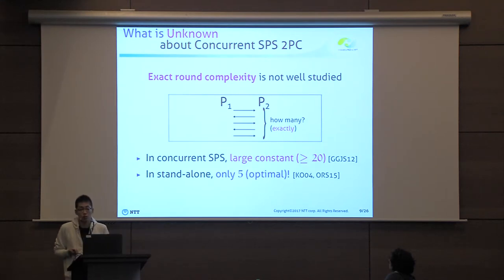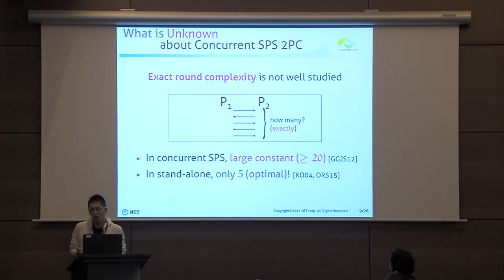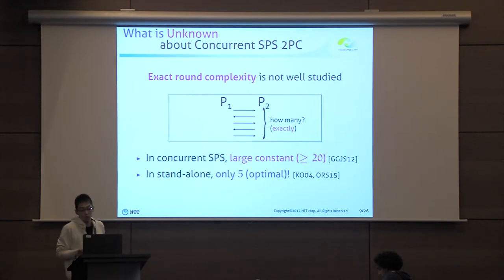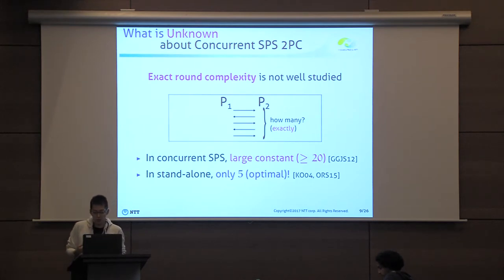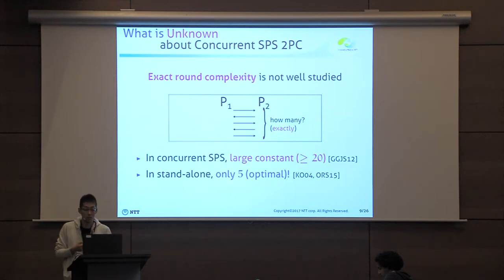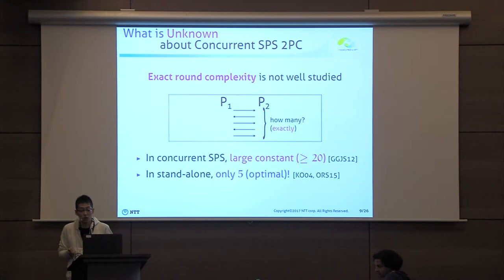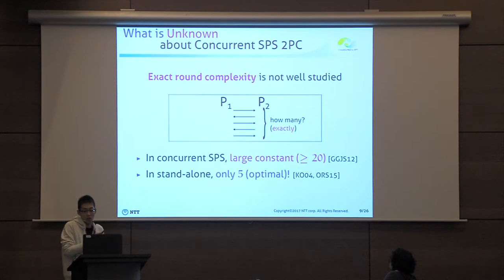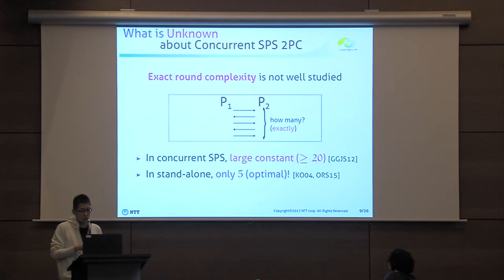However, even though asymptotic round complexity has been extensively studied, the exact round complexity has not been well studied. In fact, previous work focuses only on asymptotic round complexity, and the exact round complexity of those protocols has a large constant, such as 20. This is in stark contrast to the standard setting, because in the standalone setting, exact round complexity is also well studied, and we already know that only five rounds is optimal for secure two-party computation.